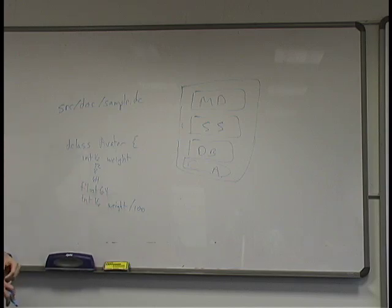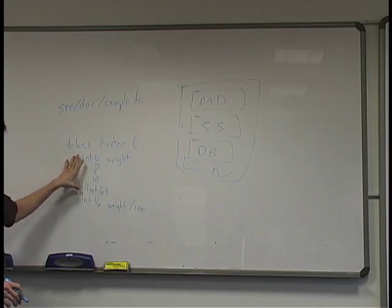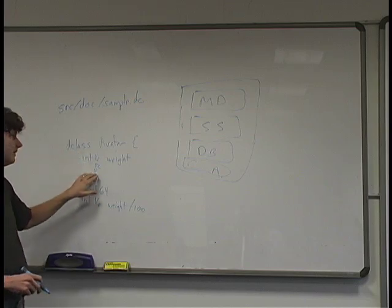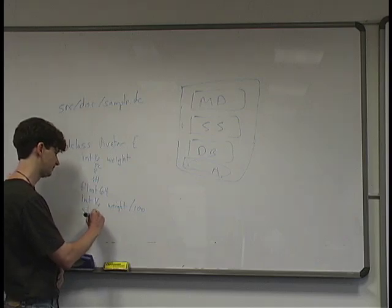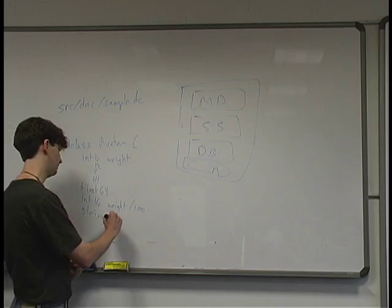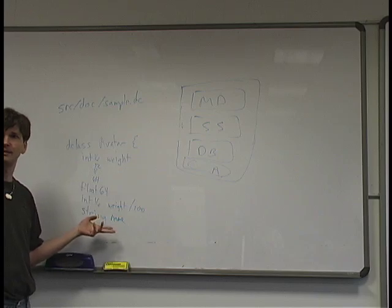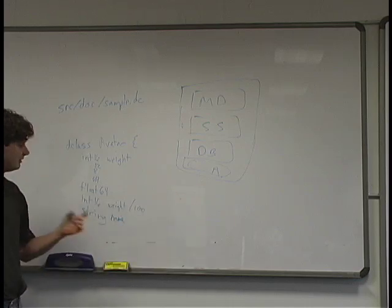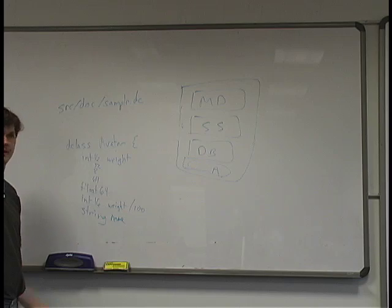We have the string type, which people use maybe more than they should. It's a length-terminated string: it stores a 16-bit length followed by the string characters, so you can store up to 64K characters. If you put it in there and send it, it will go out on the wire — which is fine for occasional messages. Chat messages are a perfect example of wanting to send a string.